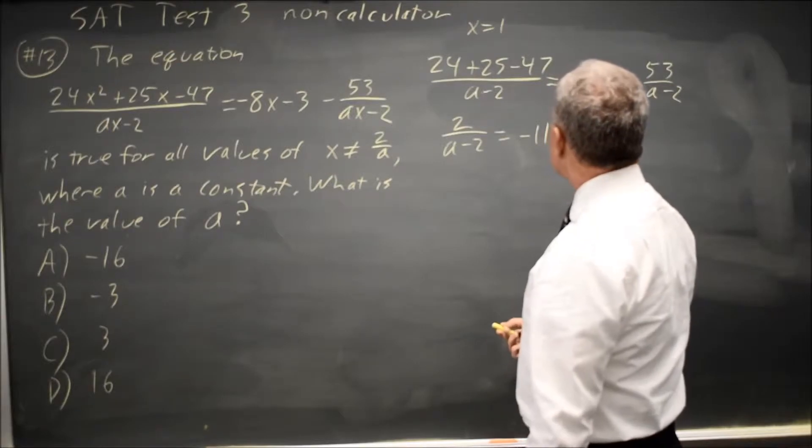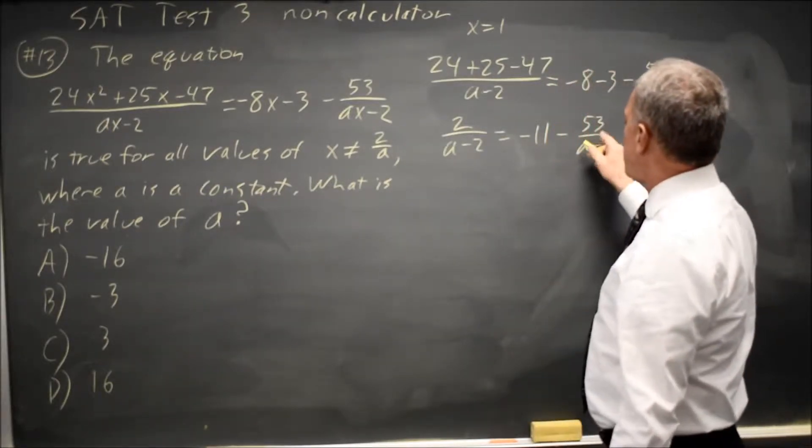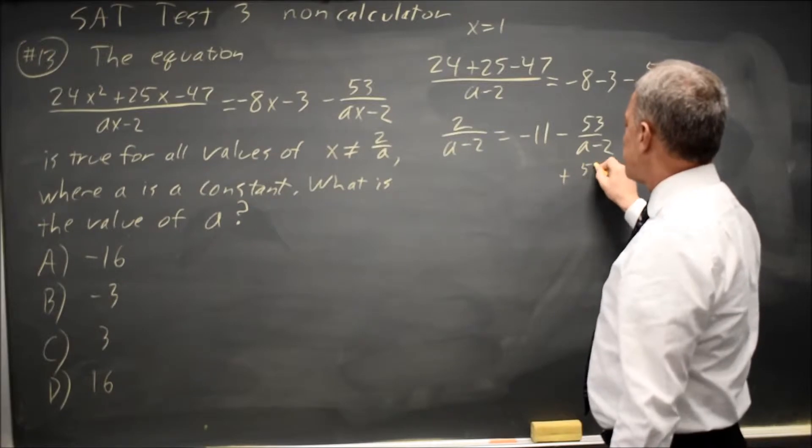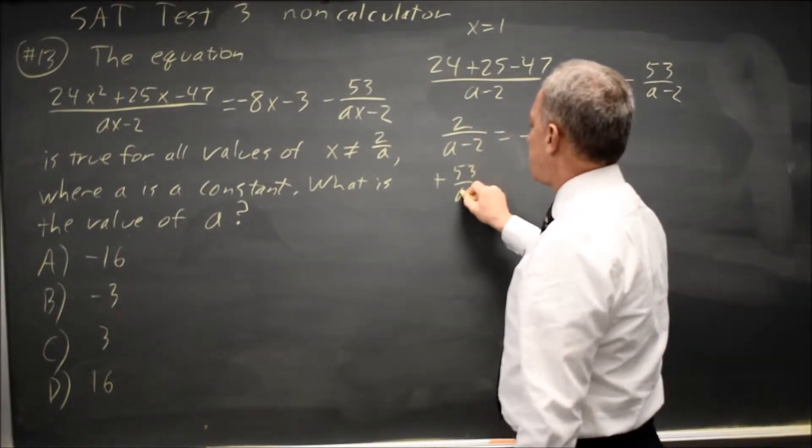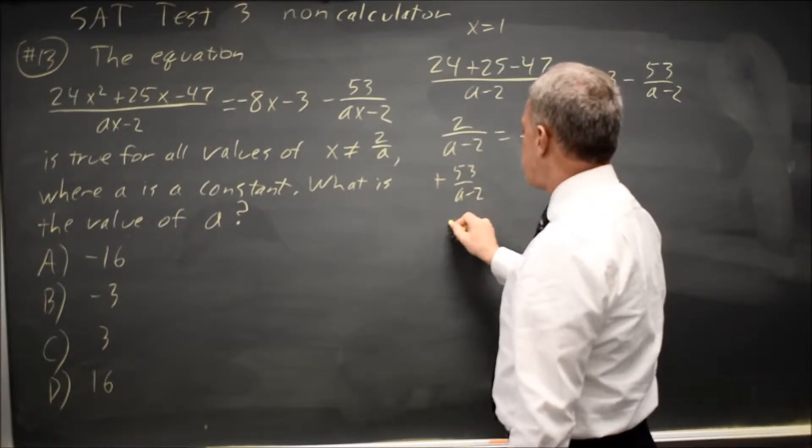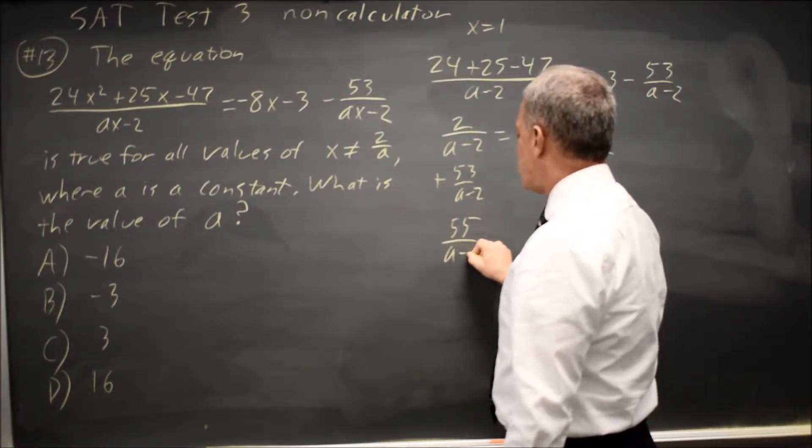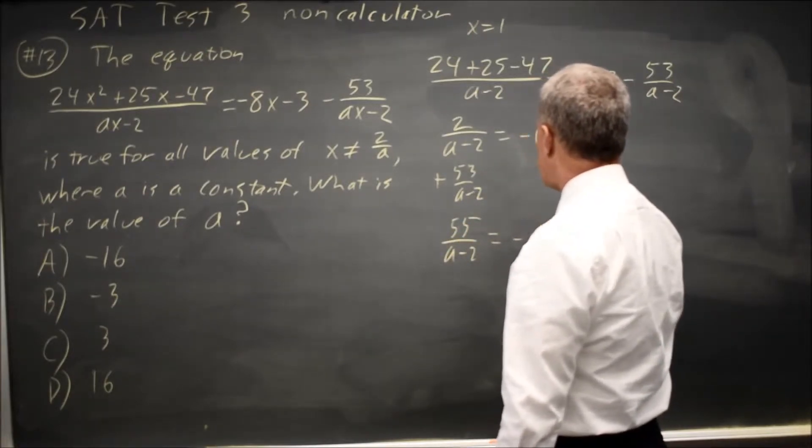Now let's move the A minus 2 term to the left, plus 53 over A minus 2, and that gives me 55 over A minus 2 equals negative 11.